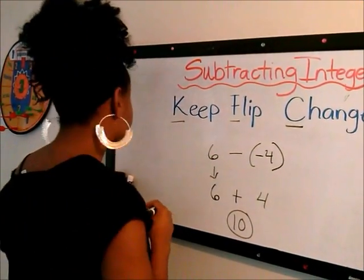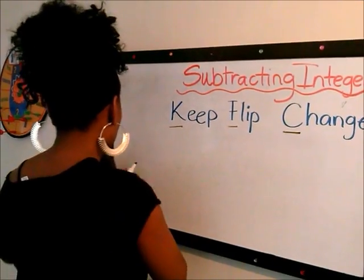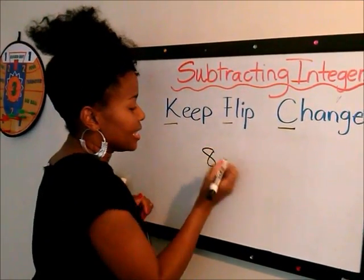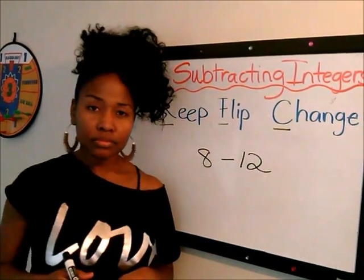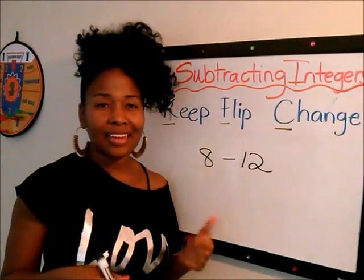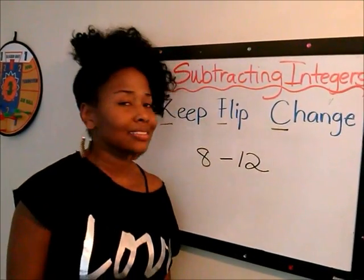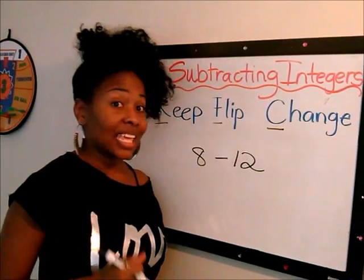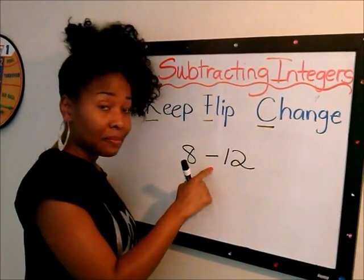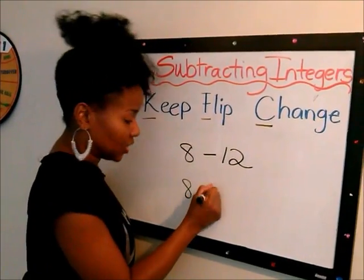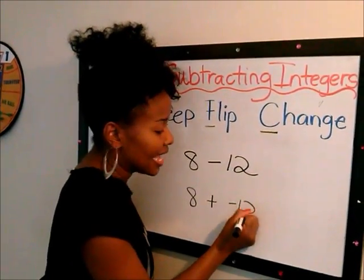One more example. What if I have eight minus 12? A lot of students would look at that and not think too deeply and say, oh, that's four, right? Not quite. We're still going to use KFC. I'm going to keep my eight the same. I'm going to flip this into addition. And I'm going to change this positive 12 into a negative 12.